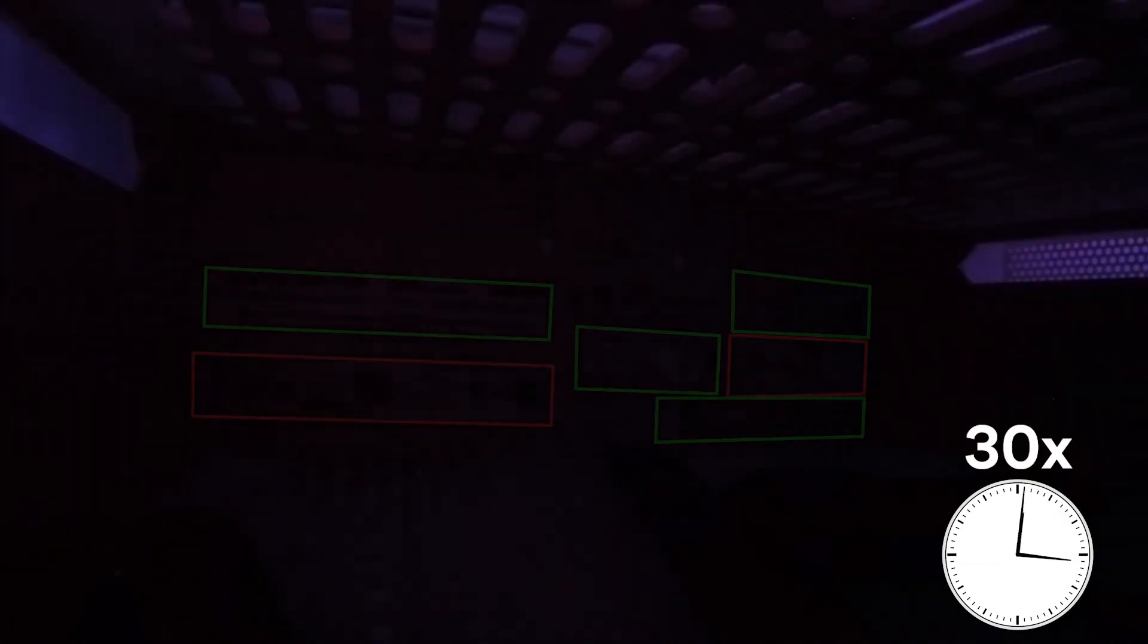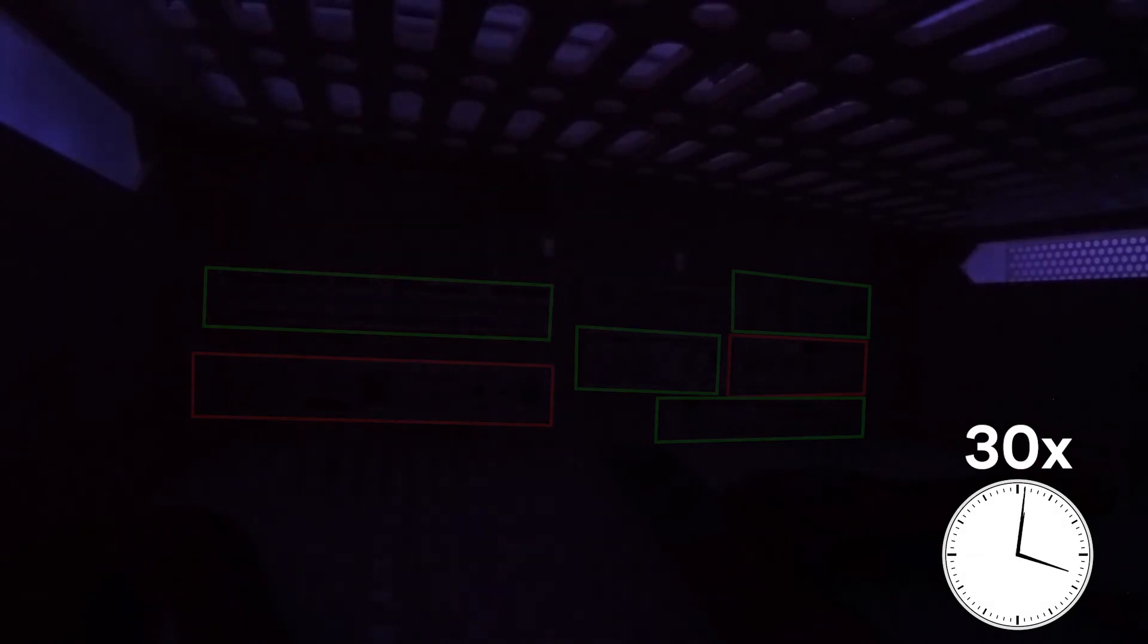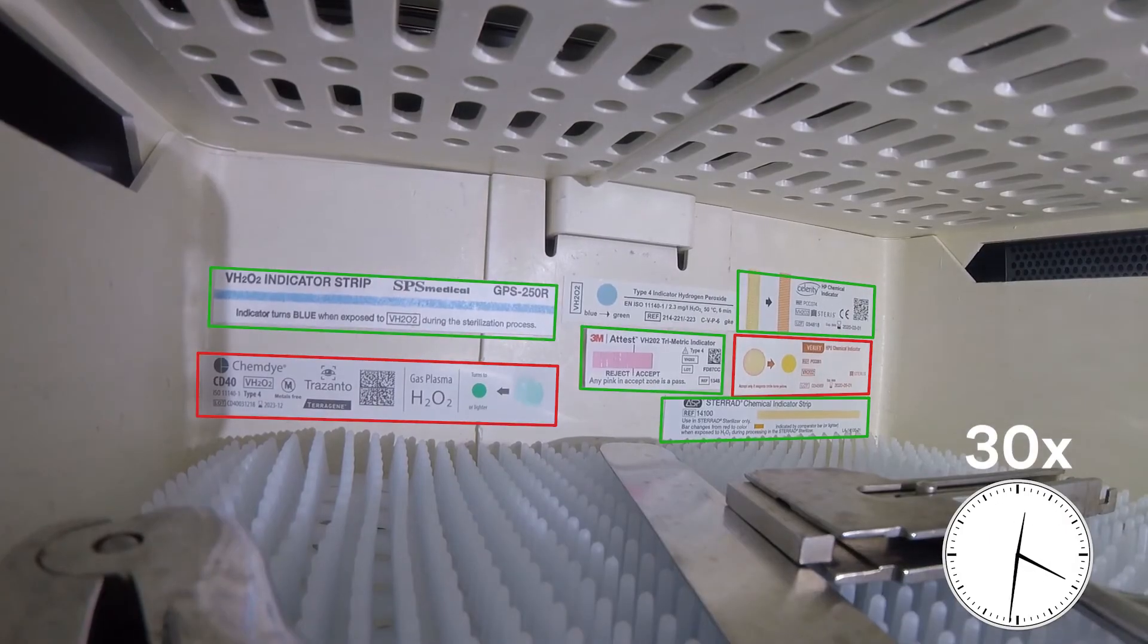The sterilizer advances through several remaining cycle stages, including stages to remove residual hydrogen peroxide before the cycle is complete.